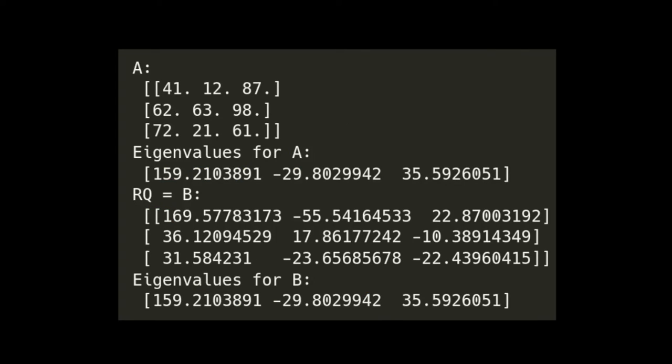This is what the terminal output will look like. Here you can see at the top we have our A matrix, all different values. You can see it's clearly not symmetric in any way, all random values, three by three. Our eigenvalues for our A matrix are 159 and some change, negative 29 and some change, and 35 and some change. Now, our similar matrix B, which is the product RQ, you can see is very clearly different from our A matrix.